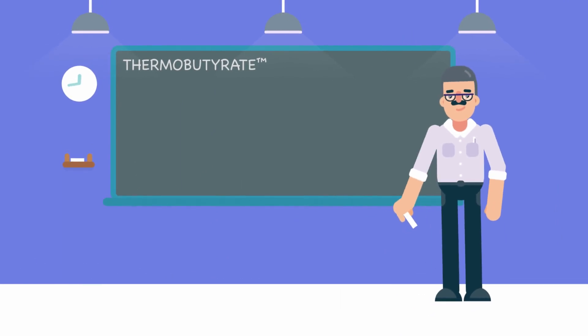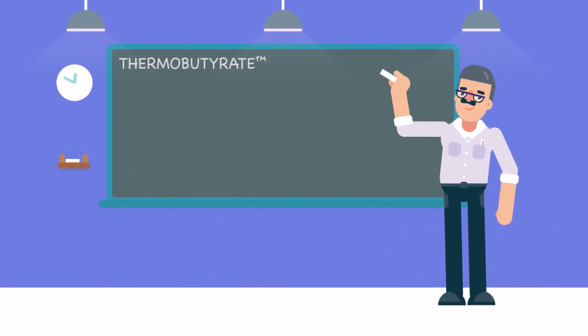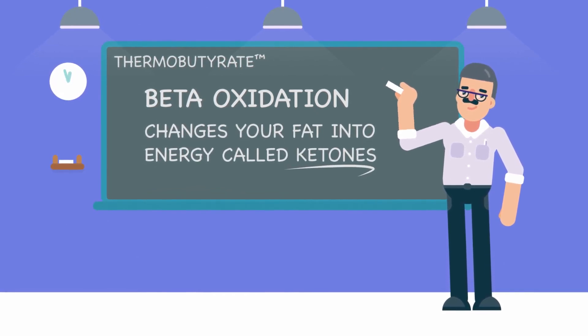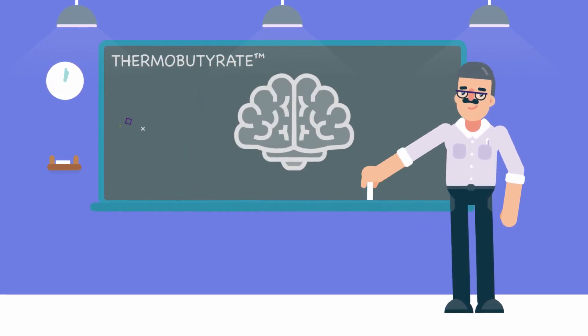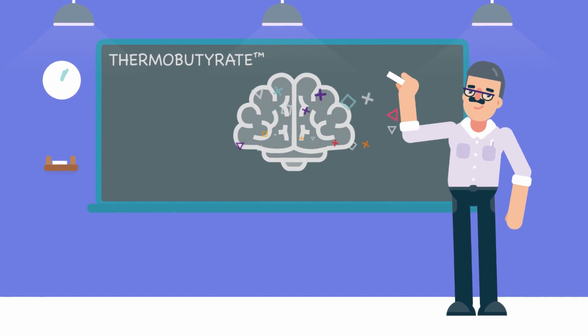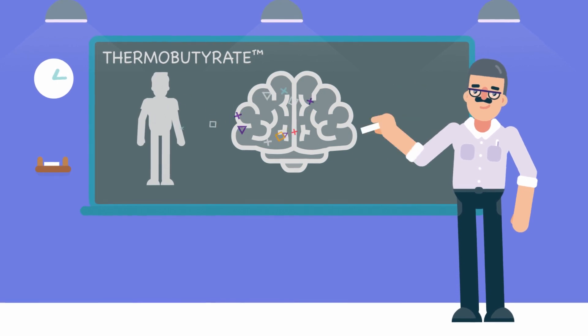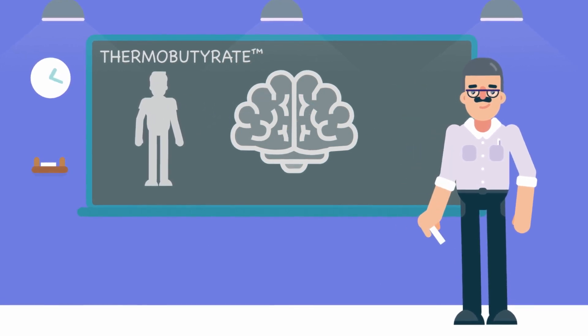Also, thermobutyrate does something cool. It turns on a special enzyme system called beta-oxidation, which changes your fat into energy called ketones. These ketones go to your brain and give you super energy and clear thinking. And guess what? This happens using your body's own fat, not any outside stuff like special ketones.